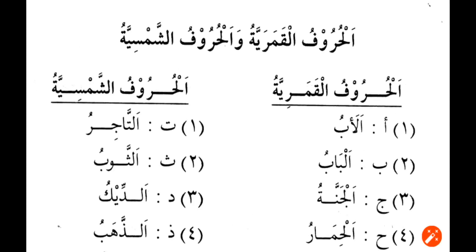In Al-Uruful Kamariyat, when we add Alif Lam to a noun, we read the Lam. For example, Abun — when we add Alif Lam to Abun it becomes Al-Abu, so here we are pronouncing the Lam. But in the case of Al-Uruful Shamsiyat, Alif Lam plus Ta-Jirun becomes At-Tajiru — the Lam is not pronounced. Instead, the noun attached to the Alif Lam carries a Shadda, a double letter.